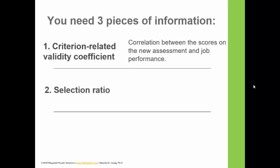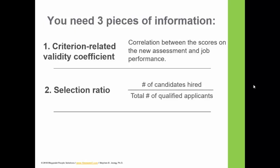The second piece of information is the selection ratio — the number of candidates hired divided by the total number of qualified applicants. For example, if 100 people apply for a software engineer position and you hire 50, your selection ratio is 0.5. Note that applicants should be qualified: if 100 apply but only 20 are qualified, use 20 in the denominator for a more accurate selection ratio.